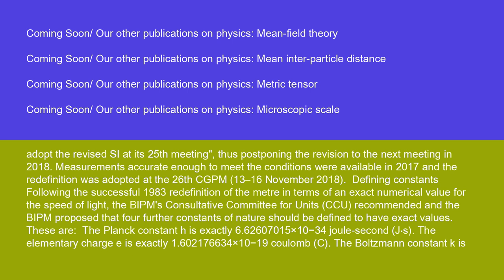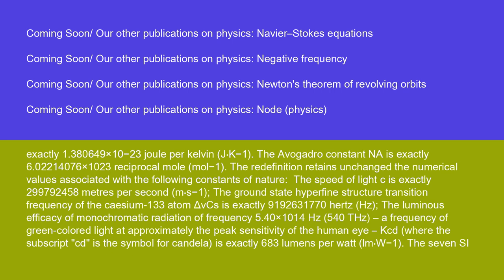Following the successful 1983 redefinition of the meter in terms of an exact numerical value for the speed of light, the BIPM's Consultative Committee for Units (CCU) recommended that four further constants of nature be defined to have exact values. These are: the Planck constant H = exactly 6.62607015×10⁻³⁴ J·s; the elementary charge e = exactly 1.602176634×10⁻¹⁹ C; the Boltzmann constant K = exactly 1.380649×10⁻²³ J·K⁻¹; and the Avogadro constant NA = exactly 6.02214076×10²³ mol⁻¹.